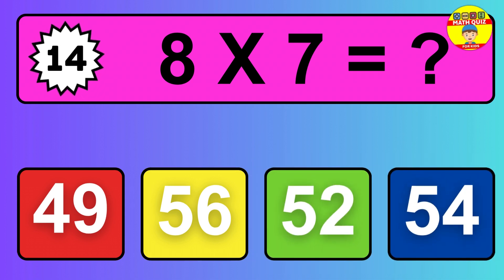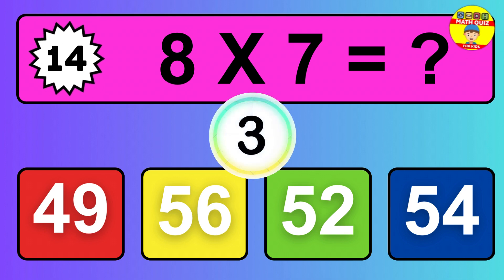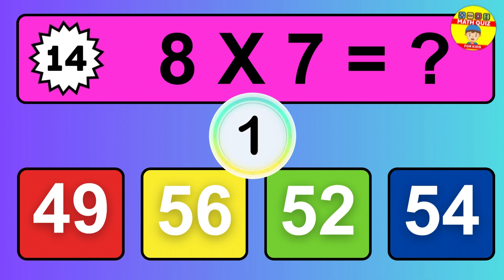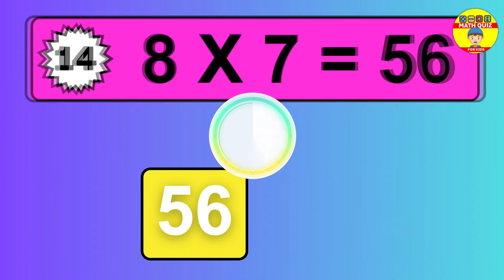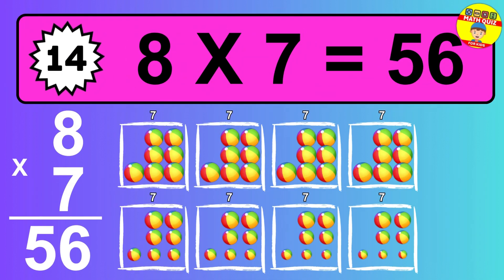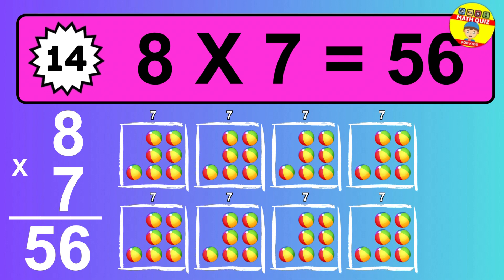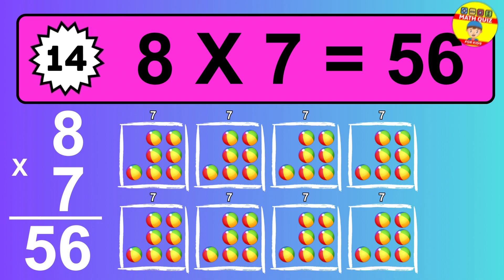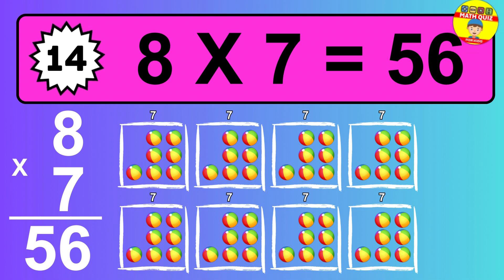Question 14. Eight times seven equals what? So the answer is eight times seven is 56. To calculate, we have eight groups with seven balls each one. So how many balls do we have? Fifty-six balls.